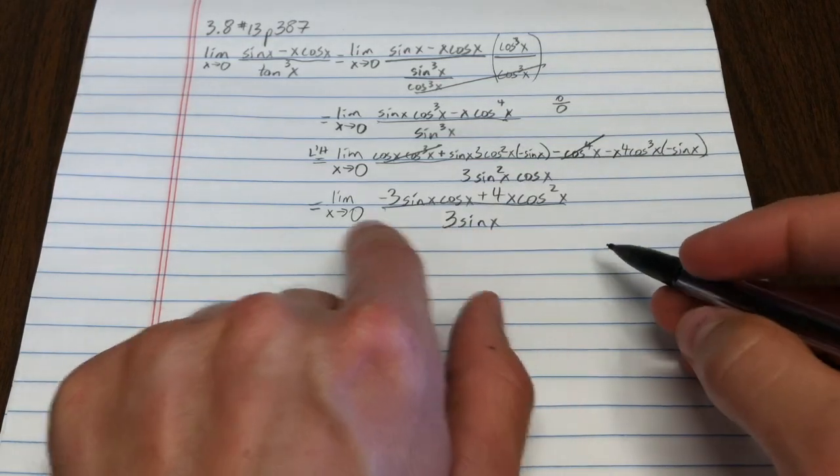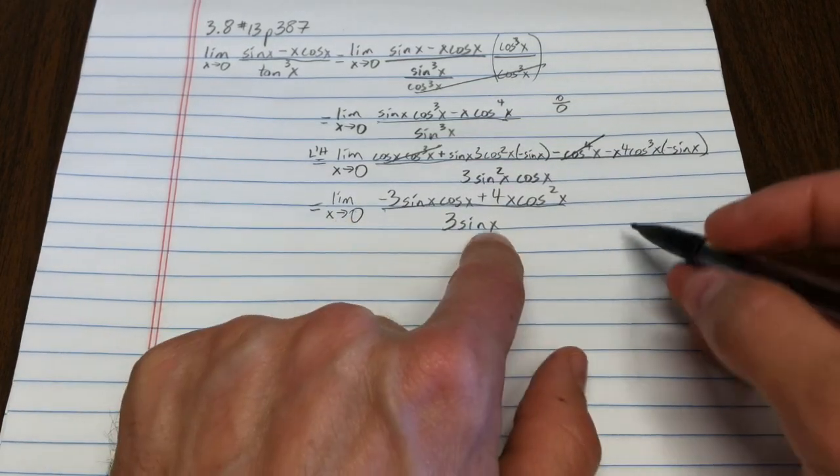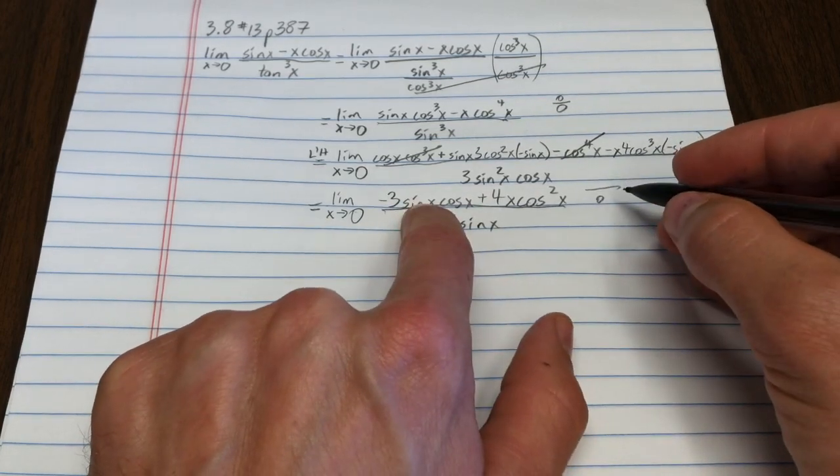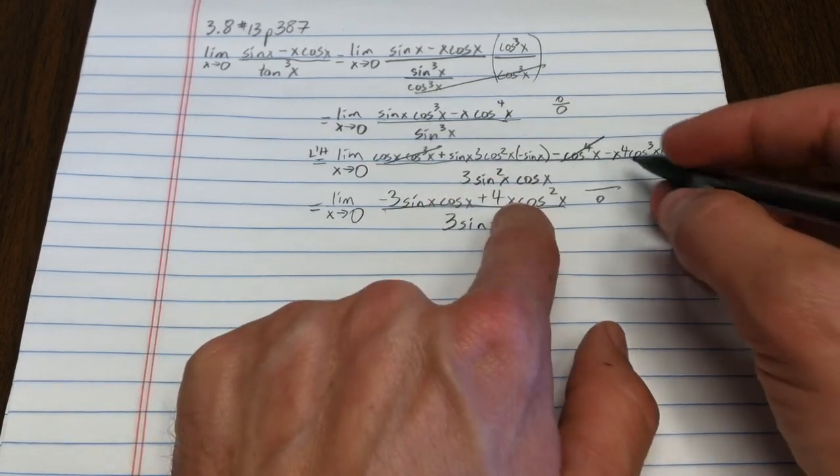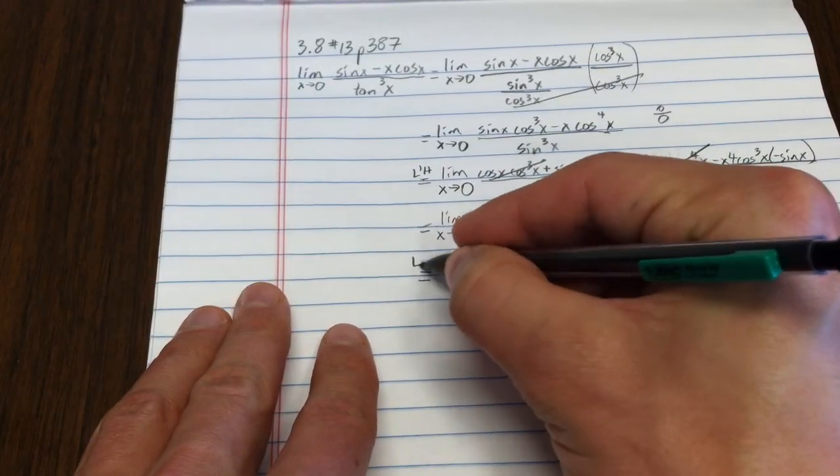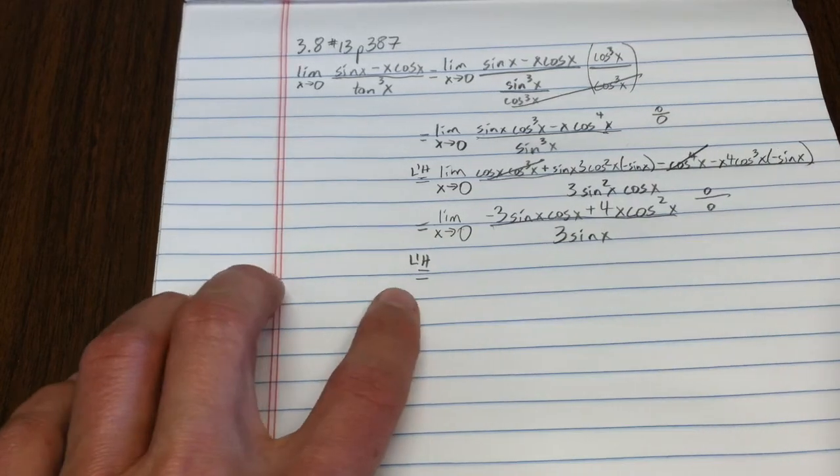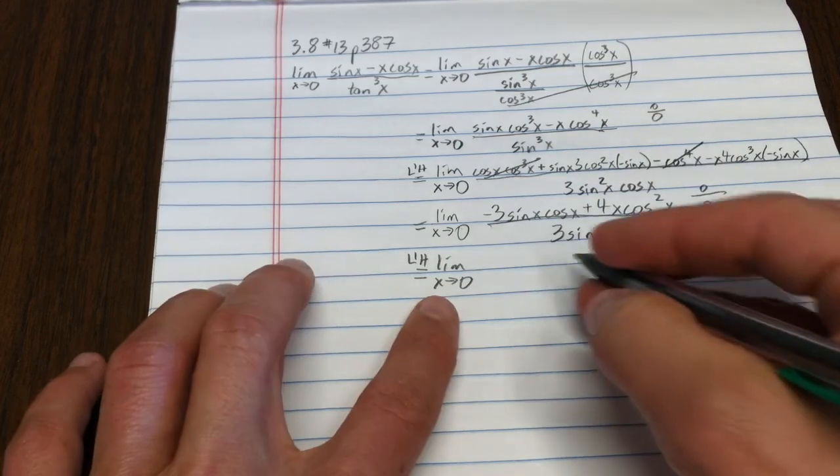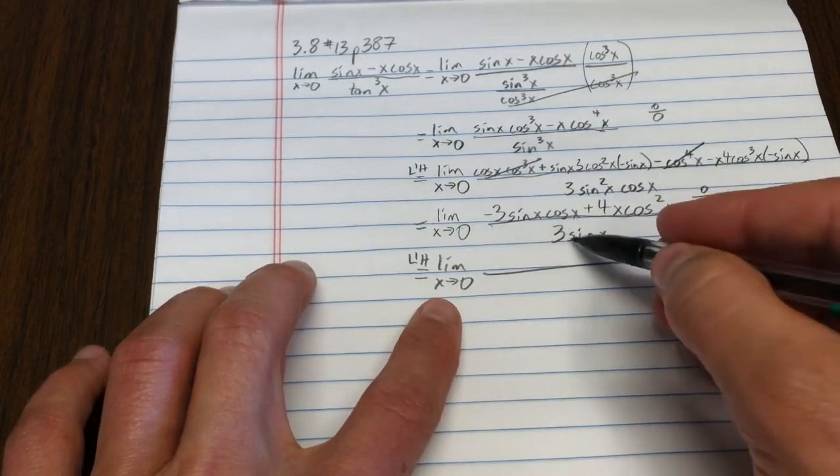Now, I'm still at an indeterminate form. As x goes to zero, of course, 3 sine x is zero. But also the numerator, sine x is zero, so this term is zero, x is zero. So we still get the privilege of using L'Hopital's rule one more time, but hopefully it will be simpler now.